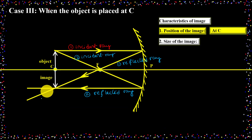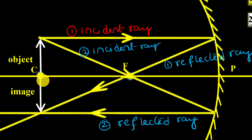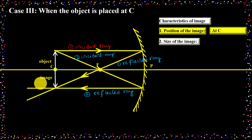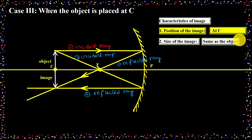Next, what about the size of the image? Observe the size of the image and the size of the object — both are the same. When the object is placed at the center of curvature, the image size is the same as the object size. In this case, we will get a magnification of minus 1. Why minus? Because for real images, magnification is always negative. The value is 1 because object size and image size both are the same.